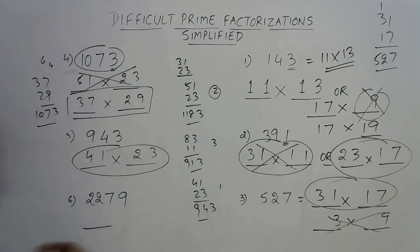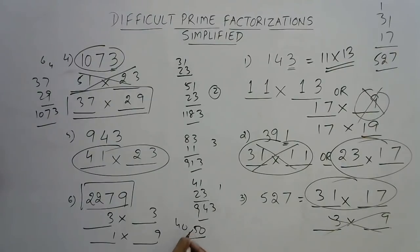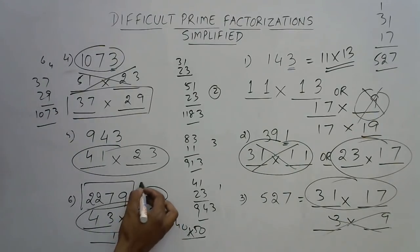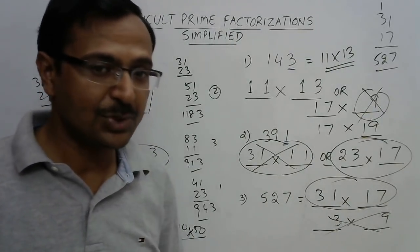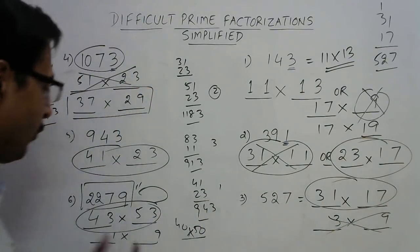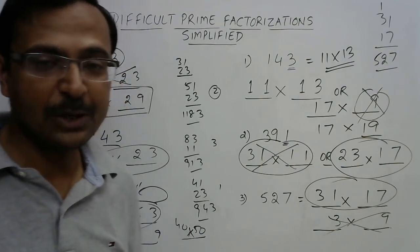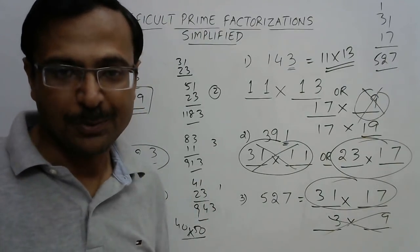Finally 2279 — unit digit 9, so options are factors ending with 3 and 3, or 1 and 9. Since 2279 is over 2000, our factors should be in the 40s and 50s because 40 × 50 = 2000. Try 43 and 53: 43 × 53 = 2279. There is no other method for testing divisibility by large primes like 43 or 53, so this technique is very useful in competitive exams.